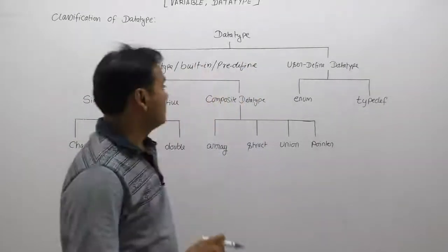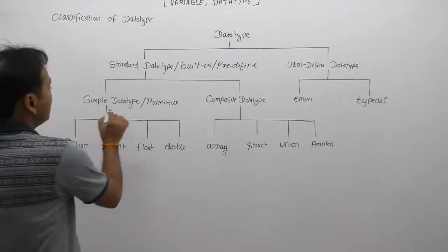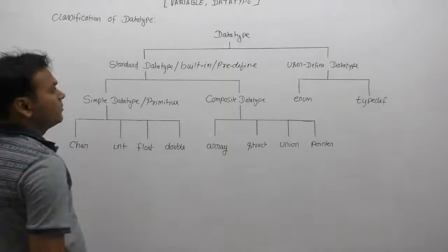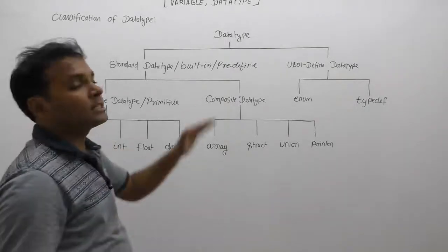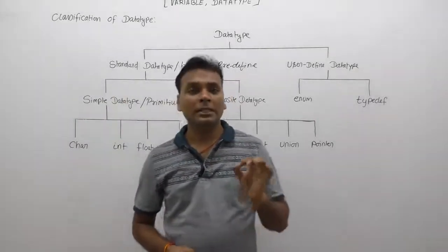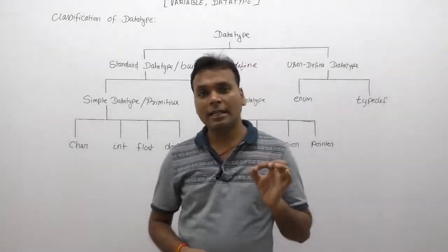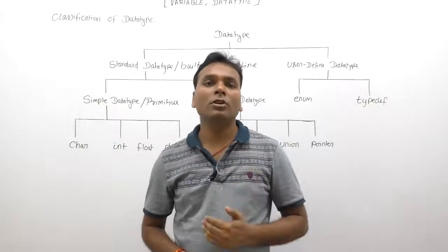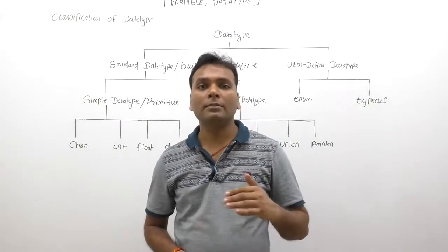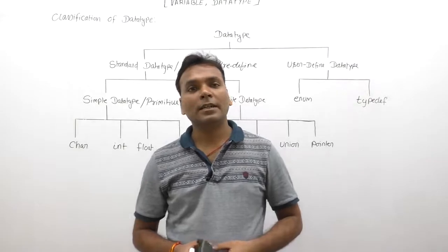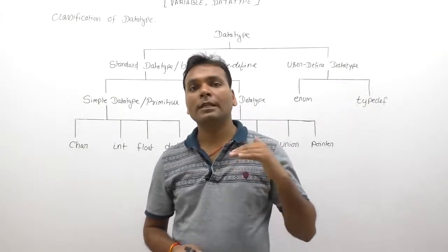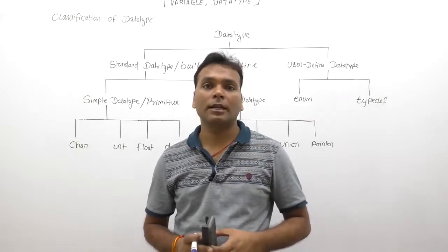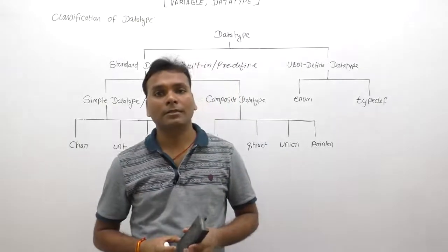We are discussing the whole classification and whole structure of data types. Initially, C language divides data types on two bases: either predefined or user-defined. Predefined data types are considered as standard types, primitive data types, or built-in data types. Next, user-defined data types.